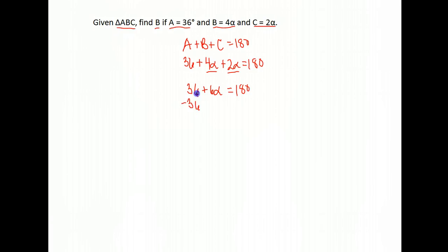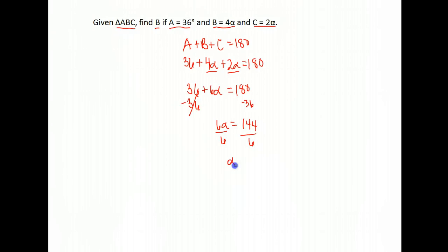We want to solve for alpha first, then find what they were looking for. Subtract 36 from both sides of the equation. 180 minus 36 leaves 144, then divide both sides by 6. Now think carefully — alpha is 24, but is that what I was asked to find? Am I done?